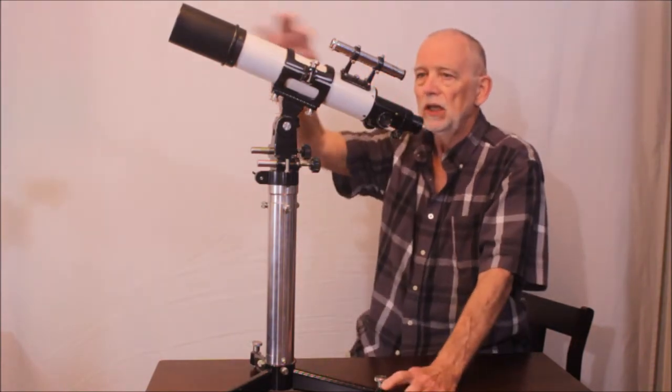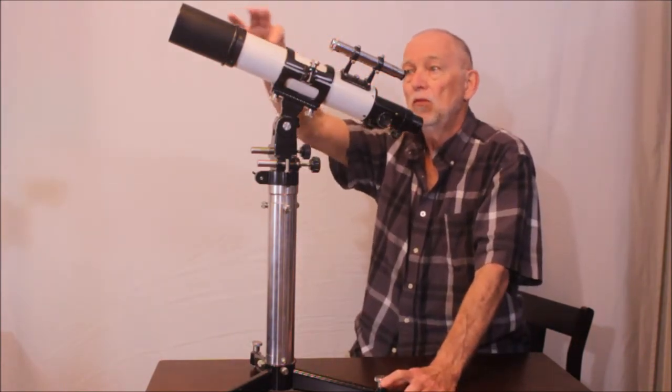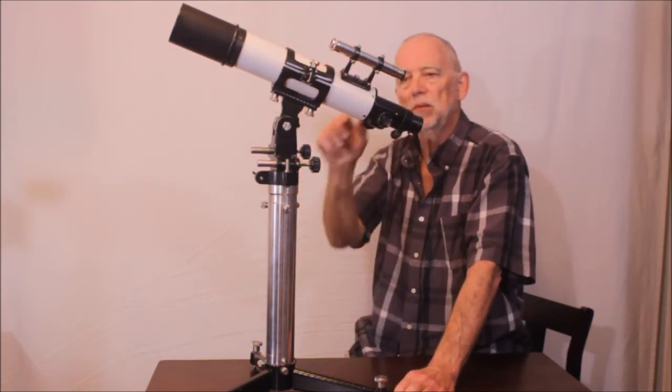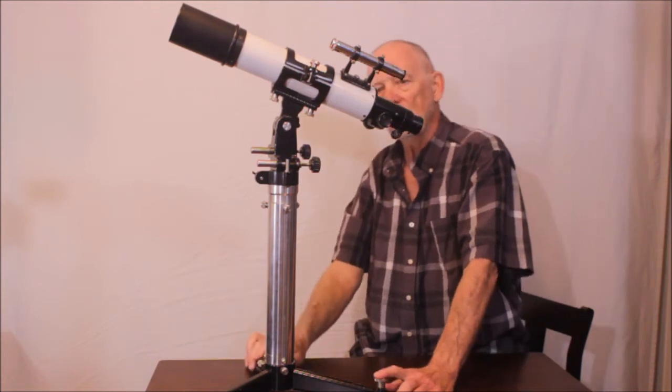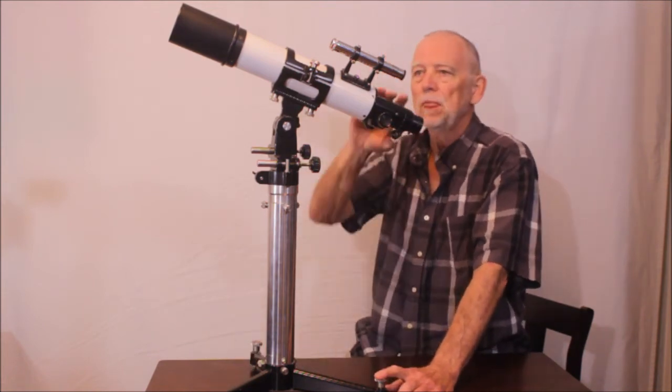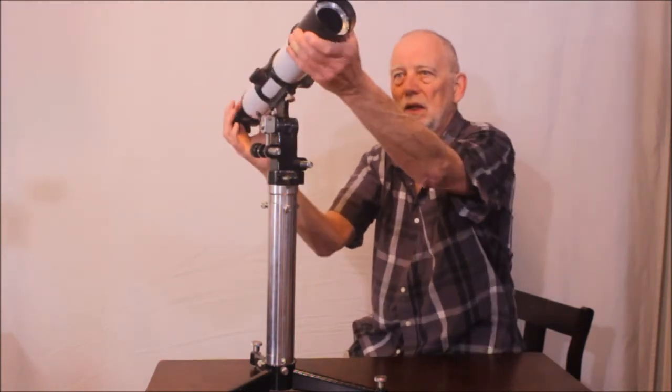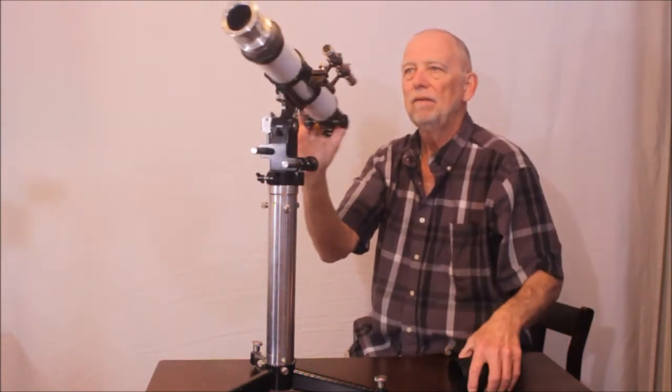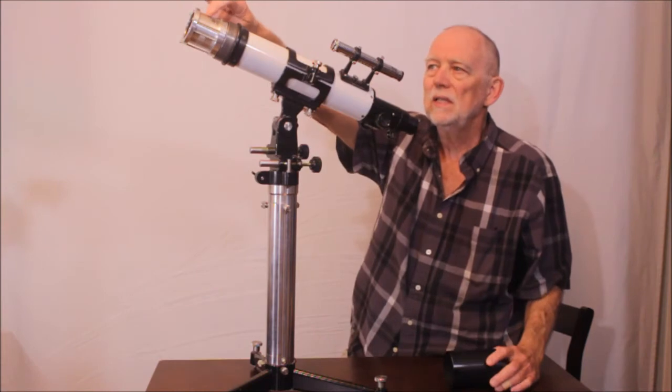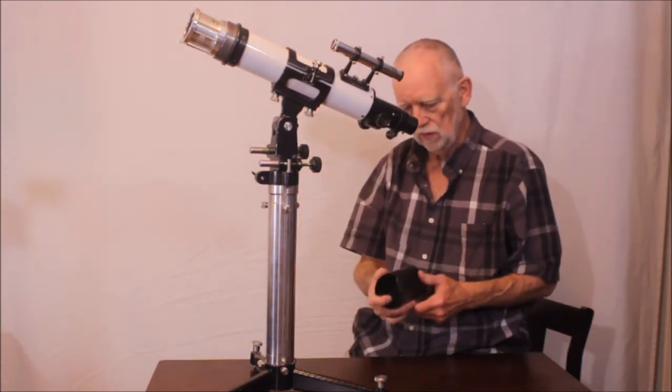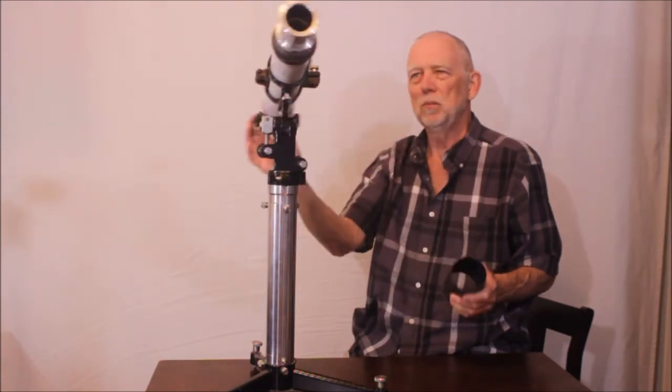This is actually a formerly damaged tube from a 60 millimeter Unitron. Finder from a 60 millimeter Unitron. And focuser from a 60 millimeter Unitron. But there's a little surprise under the hood here. If we take a look at this. I'll show you a close-up. That says Zeiss 50 millimeter. So this is a Zeiss 50 millimeter telescope objective.